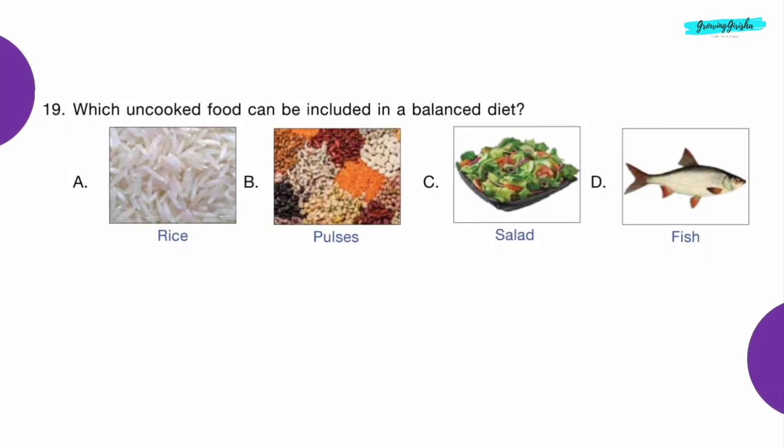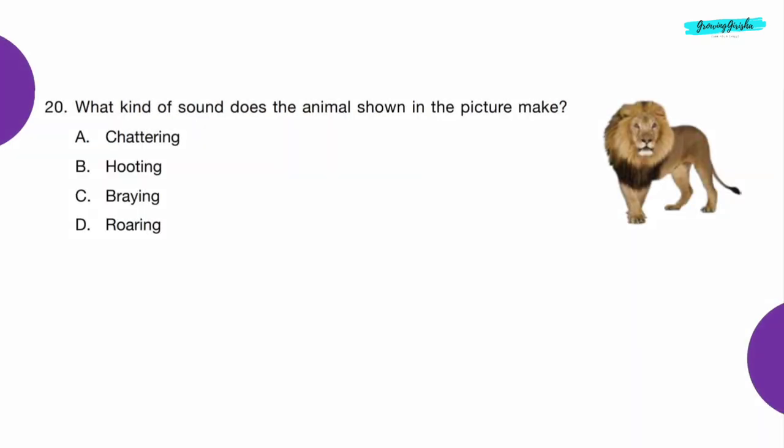Question 19: Which uncooked food can be included in a balanced diet? Option C — Salad.